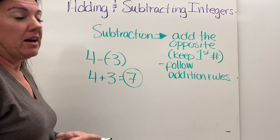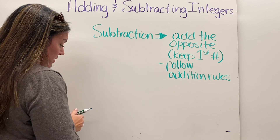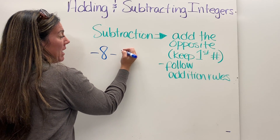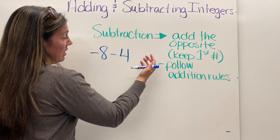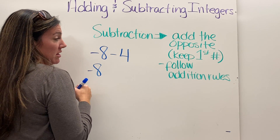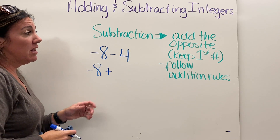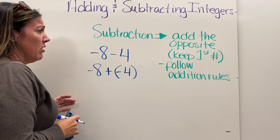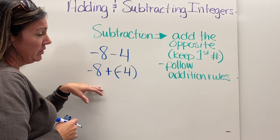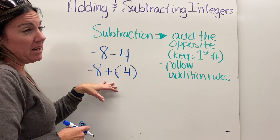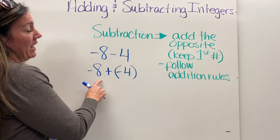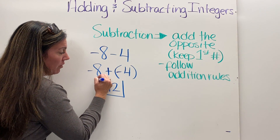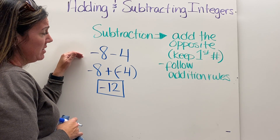Next example: negative eight minus four. I keep the first number, change subtraction to addition, and use the opposite of positive four, which is negative four. Now I have negative eight plus negative four — same signs, so I add their absolute values: eight plus four is twelve, and I keep the negative sign. The answer is negative twelve.